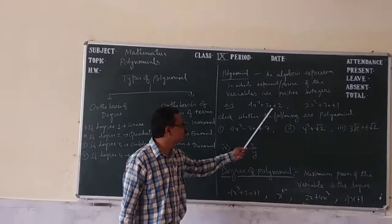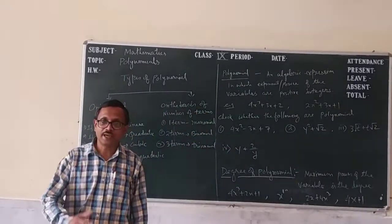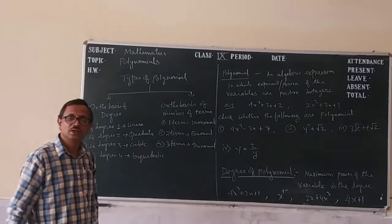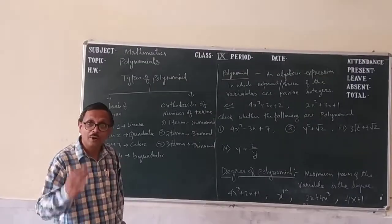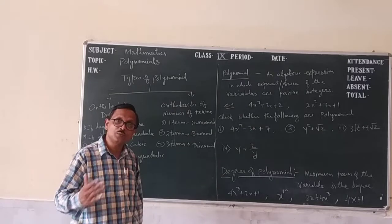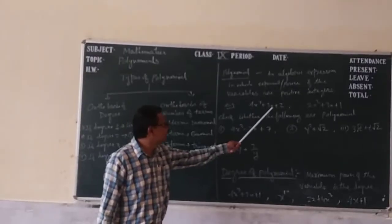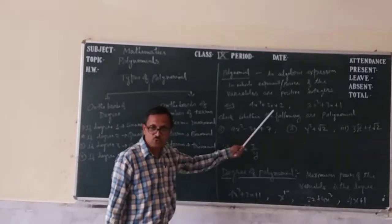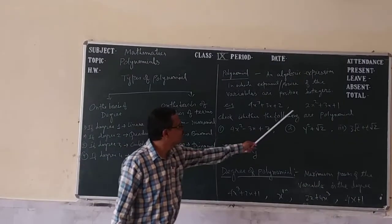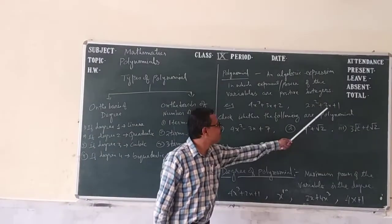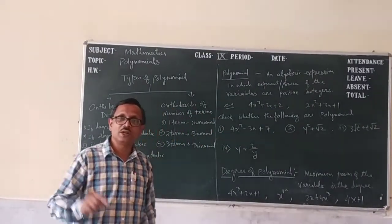This is X cube. This is X. This is X square. So these are the unknown quantities — X, Y, Z — generally known as variables. So power of the variable, that means exponent of the variable. Here the power of the variable is 3. Here power of the variable is 1 — X only means power is 1, or exponent is 1. Here power is 2. Here power of X is 1.